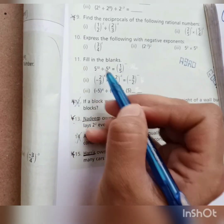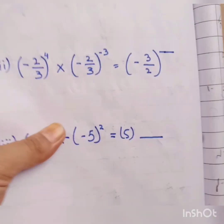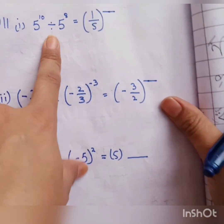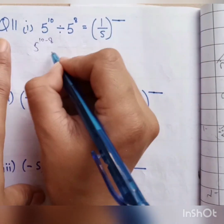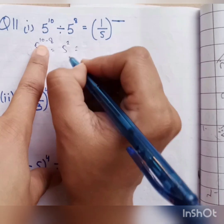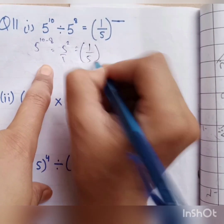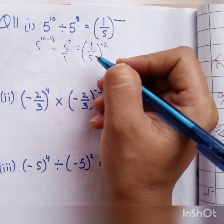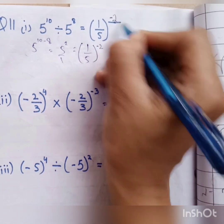Question 11 starts: fill in the blanks. We have 5 power 10 divided by 5 power 8 equals 1 by 5 power blank. Since the base is the same, when we have a division sign we separate the powers: 10 minus 8 gives us power 2. But since we need 1 by 5, the power becomes minus 2. So we write minus 2 in the blank.